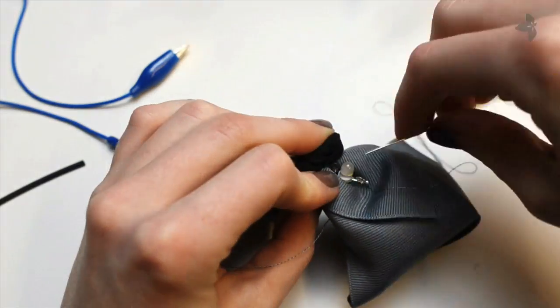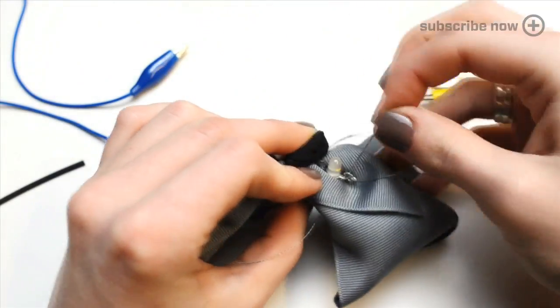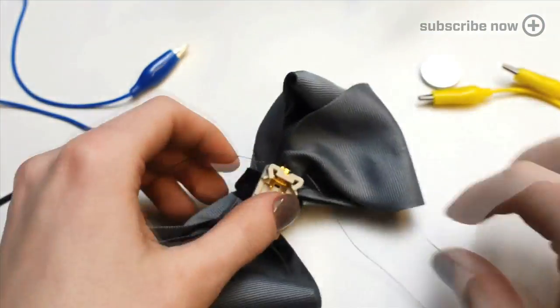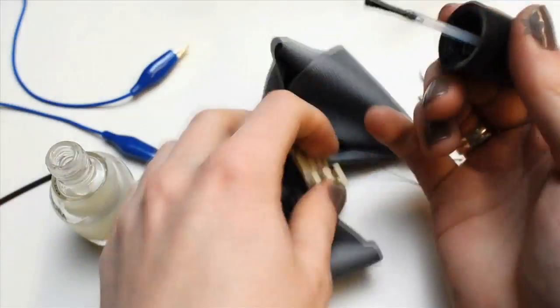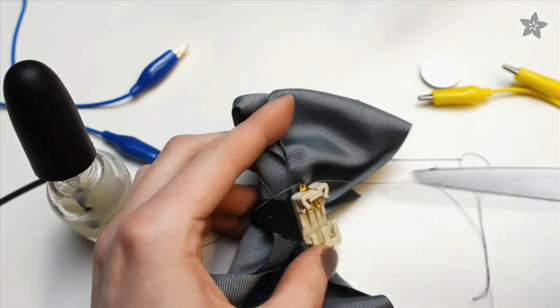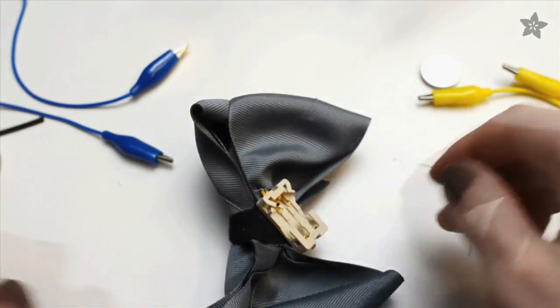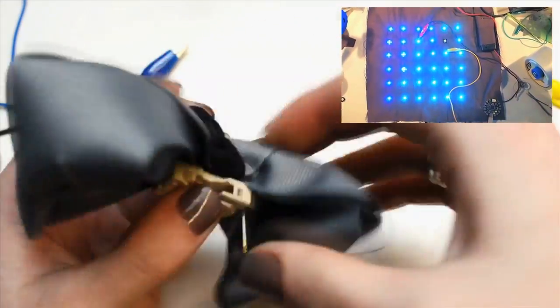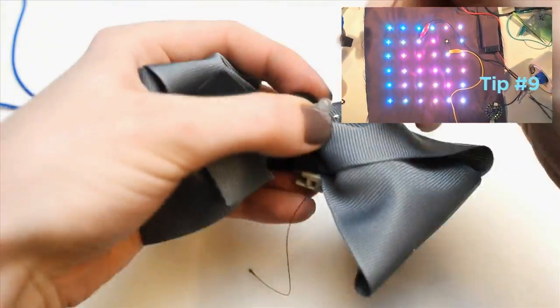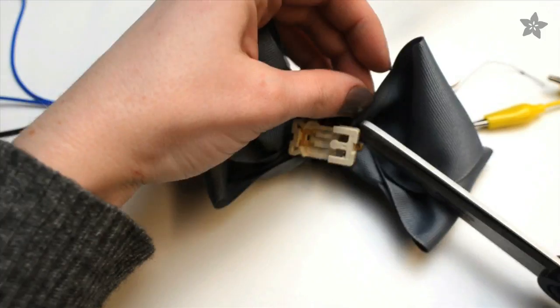You can go back and forth as many times as you want. Just end on the back of the bow in order to stitch several times around the battery holder tab before tying off your conductive thread with a knot. I like to seal my knots with clear nail polish so they don't come undone, and for more tips on conductive thread, check out our video on the subject. Repeat the stitching process to attach the other side of the battery holder to the other LED leads.